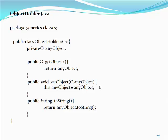Note the usage of the type parameter within the class declaration. The client can use the above class by substituting any kind of object for the placeholder O.